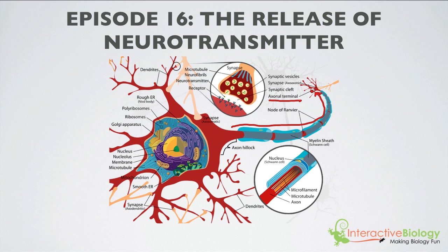Now, neurons do not exist in isolation. They are interconnected, they connect to other neurons, as you can see right here. There's a connection here, you can see there's another connection here, and another connection here. And basically, when there's a signal in one neuron, that can send a signal to other neurons, many other neurons.